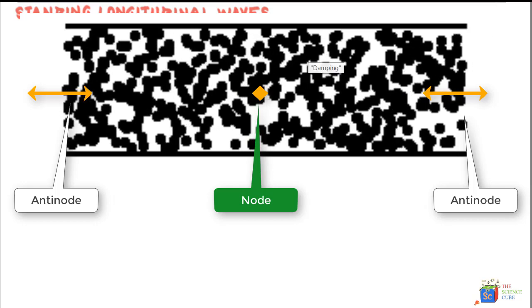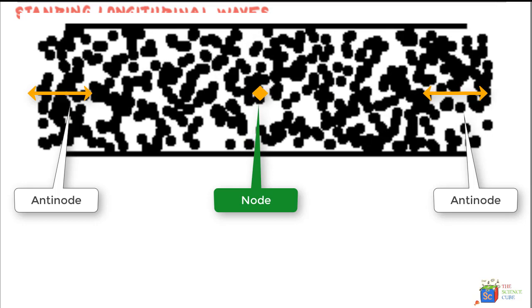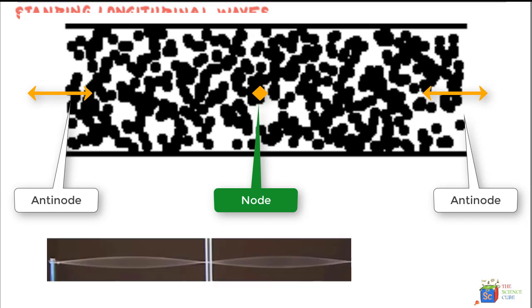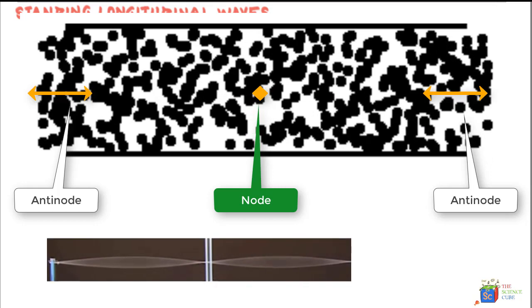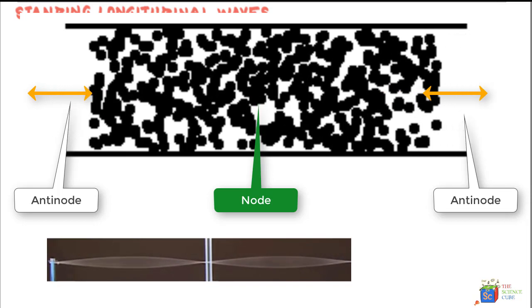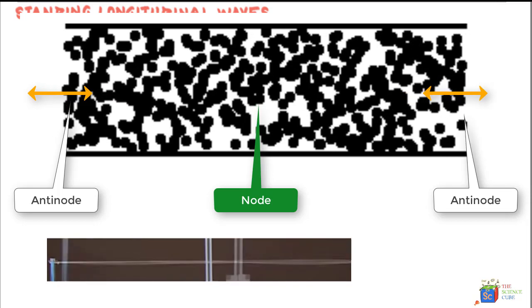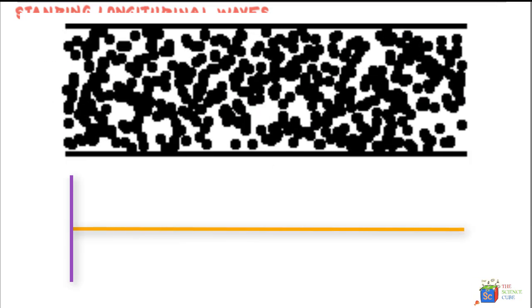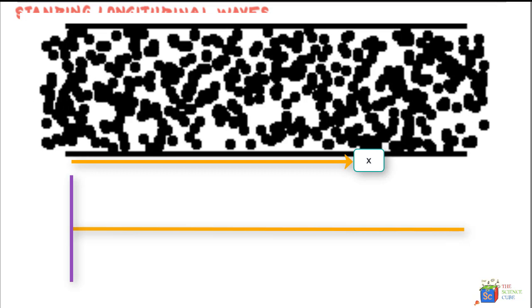But by showing it in this form, you do not quite get the feel of a standing wave as we got while dealing with transverse standing waves. So to get that feel, what we'll do is that we'll graph the motion of the particle on an x-y plane where x will be the distance of the particle from one end of the pipe.